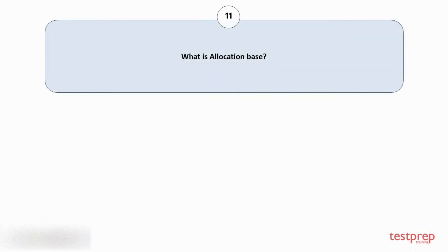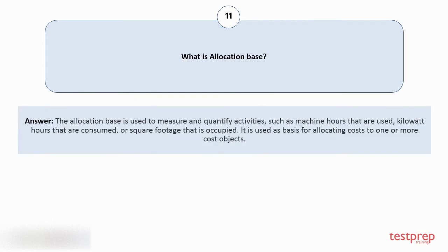Question number 11: What is allocation base? The allocation base is used to measure and quantify activities, such as machine hours that are used, kilowatt hours that are consumed, or square footage that is occupied. It is used as a basis for allocating costs to one or more cost objects.